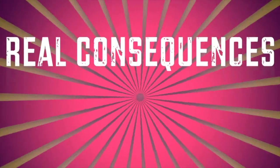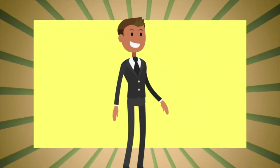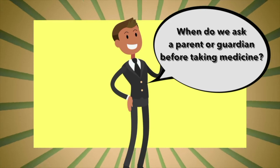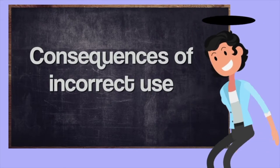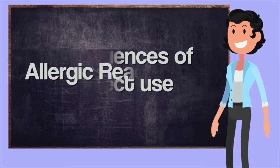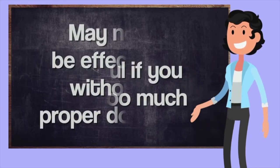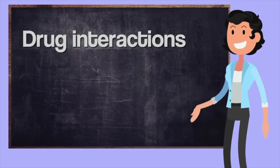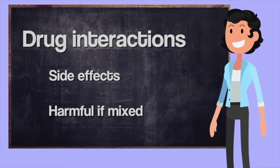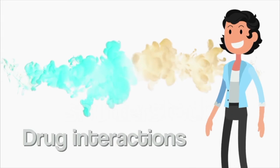Explain to students that when medicines are not used properly, real consequences including serious harm may result. Reinforce the importance of always communicating with a trusted adult before taking any medicine — every time, all the time. Consequences of using medicine improperly can include: ingredients may cause allergic reactions; medicines can be harmful if you take too much and may not be effective if you don't take the proper dose; certain medicines can interact with other medicines and may cause side effects or harm when mixed; many medicines contain the same active ingredients and should never be taken at the same time.